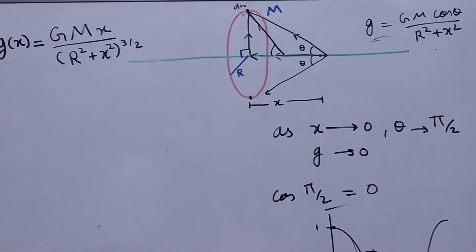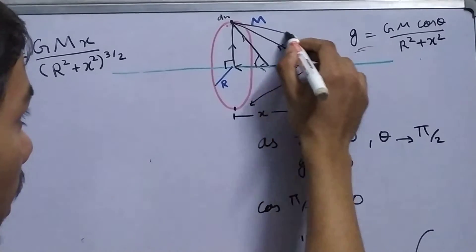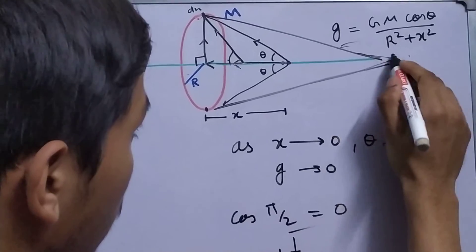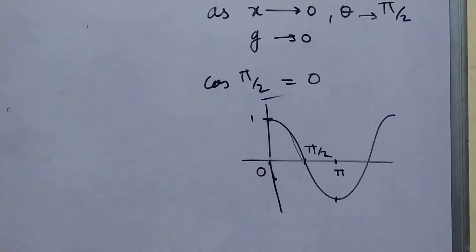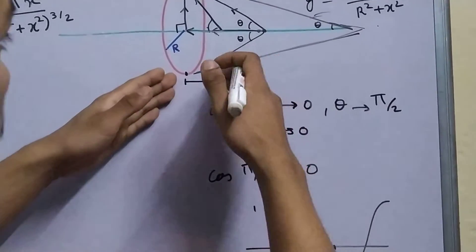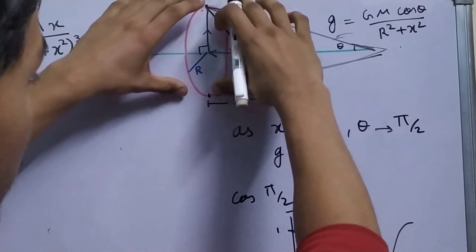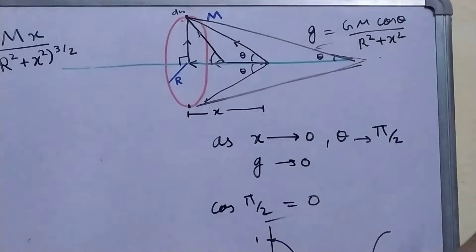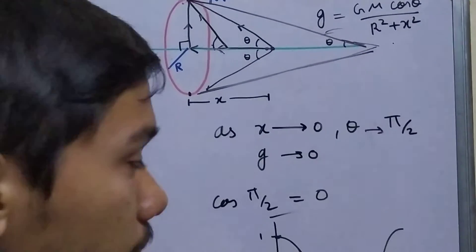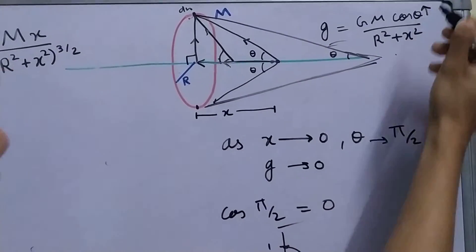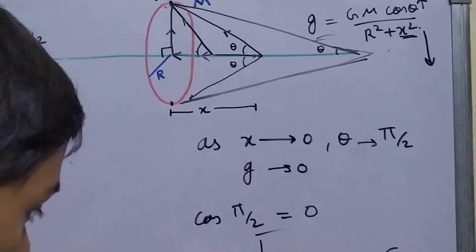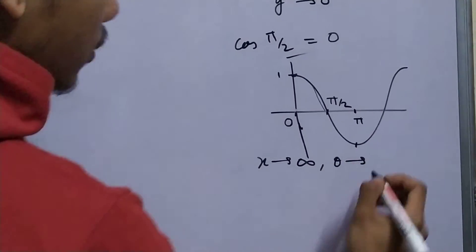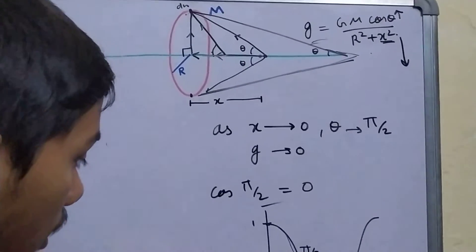Now, what if x is very, very large? You are considering points far away. In this case, theta will be very small, so cos(θ) will be very close to 1. But the point is that you are actually moving away from the mass distribution. So no matter what mass distribution this is, if you are moving away, then your field will eventually drop down to 0. This term cos(θ) is increasing, but your x² term is decreasing. So as x moves towards infinity, although theta will slowly become closer to 0 degrees, your field will again go to 0 because you are going further away from the mass distribution.